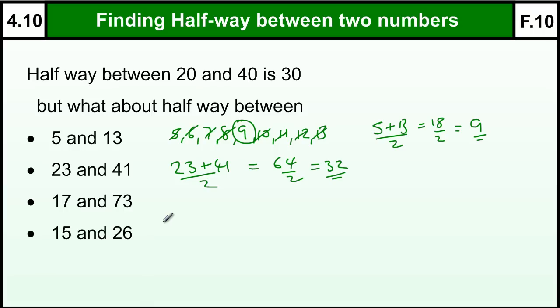So 32 is halfway between those two. 11 and 73, 11 plus 73 is 84, and I half that, I'll get 42.